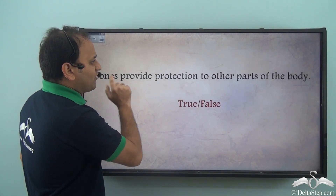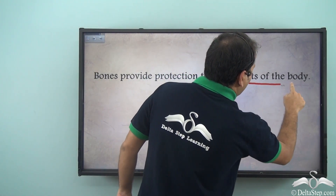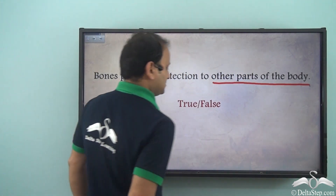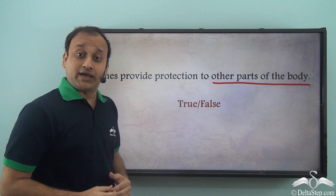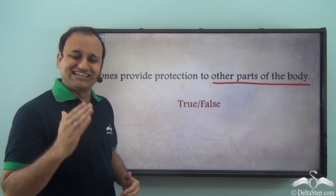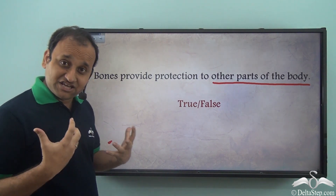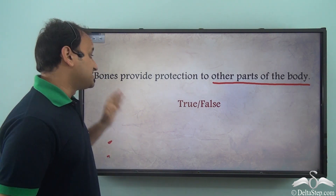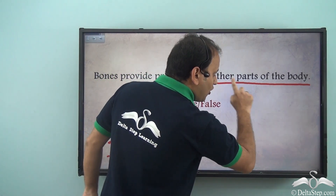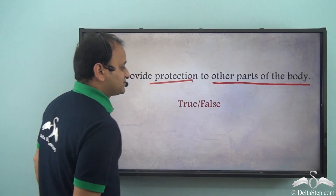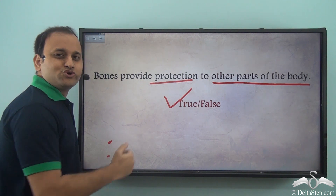So, bones provide protection to other parts of the body — is it true or is it false? What do you think? Well, it is definitely true. Bones are very strong and sturdy, and as a result, they give protection to all the other parts of the body.